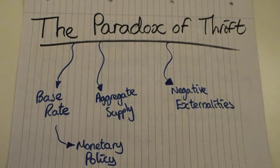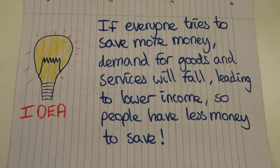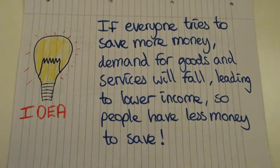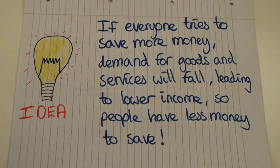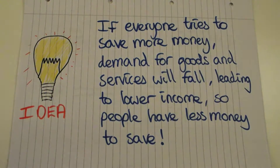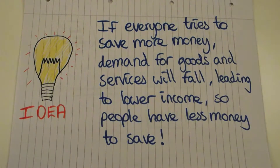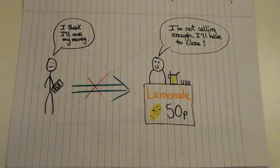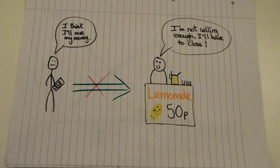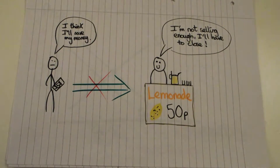The basic idea of the paradox of thrift is that if everyone tries to save more money, then the demand for goods and services falls in the economy, and this leads to lower income. So people have less money to save, meaning they're worse off than if they would have just spent their money. As a quick example: this guy has five dollars or five pounds, and instead of spending it on a glass of lemonade, he decides to save his money.